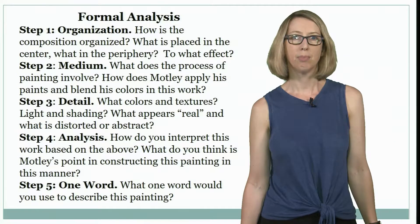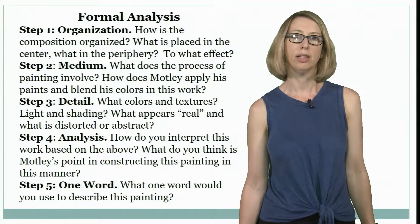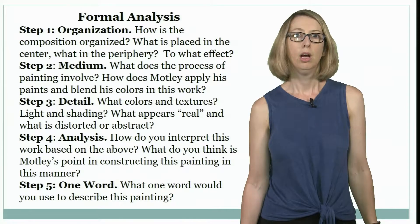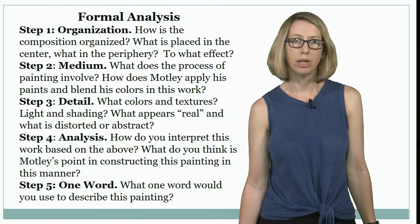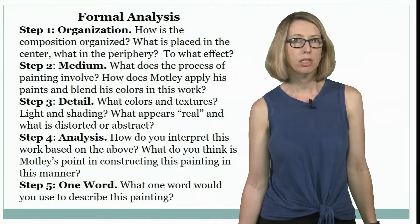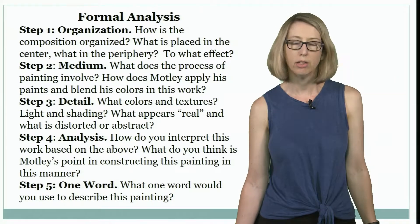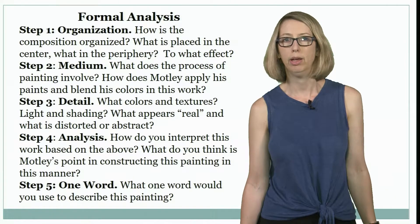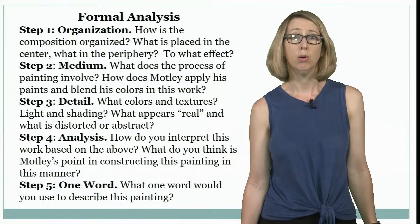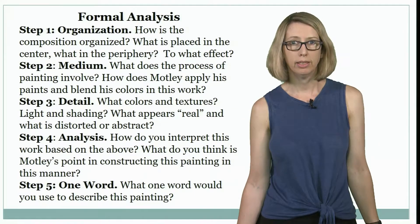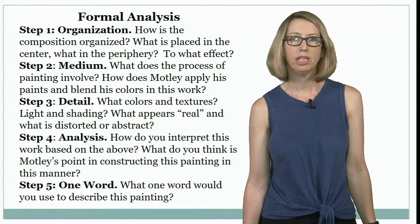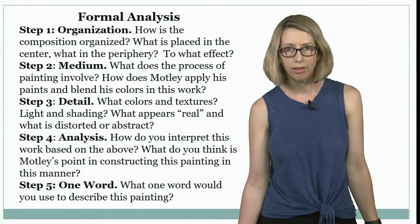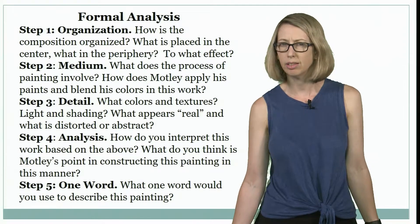Here are the steps of formal analysis and the questions I have students think about. Looking at the image: how is it organized? What's in the center? What's in the periphery? Why did Archibald Motley set up this painting in this way? Two, medium: it's a painting, it's oil on canvas. What does that mean? How does he blend color? What colors does he use? Why do you think he does that?